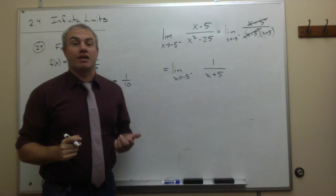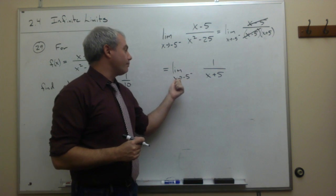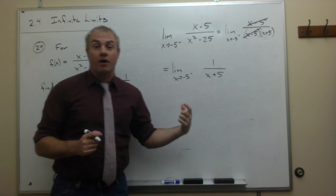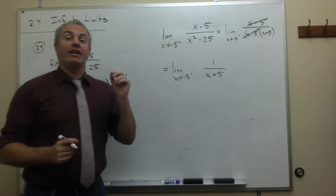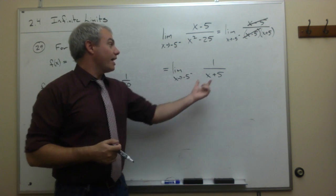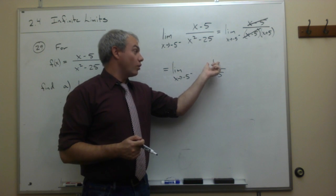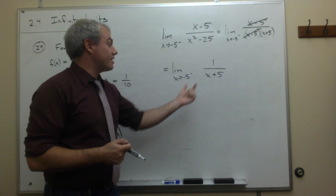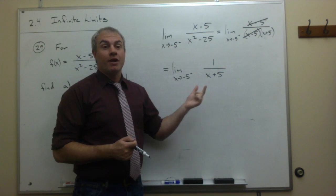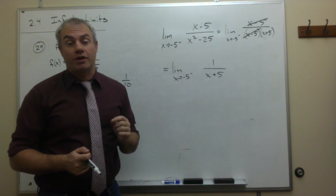The problem here is different from before — plugging in minus 5 for x gives minus 5 plus 5, which is 0, so we have division by zero. When that happens, we're either dealing with a hole in the graph or a vertical asymptote. If there's something on top to cancel it out, it's a hole; if not, it's a vertical asymptote. In this case there's nothing on top to cancel the x plus 5, so this is a vertical asymptote, meaning the limit is either positive or negative infinity.